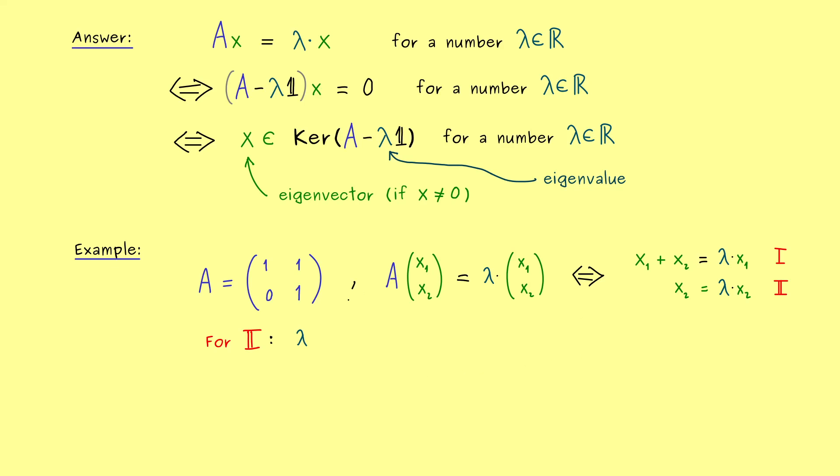For example, we can immediately say that the second equation is satisfied if lambda is equal to 1. However, this one is also satisfied if we set x_2 to 0. So we have two possibilities here, and now we can check what the first equation says about it.